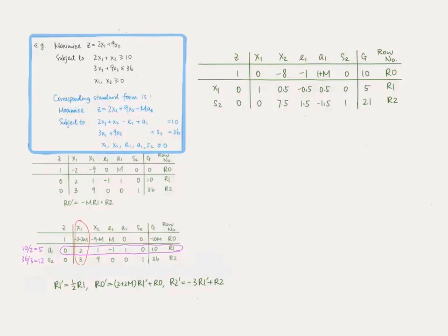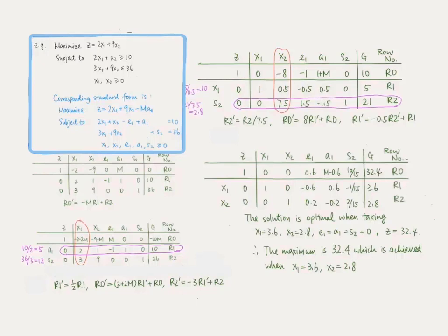But this solution is not yet optimal since there are still negative coefficients for some variables in row 0. The column representing x2 is now the key column, and row 2 is the key row. After these row operations, we reach the fourth system.